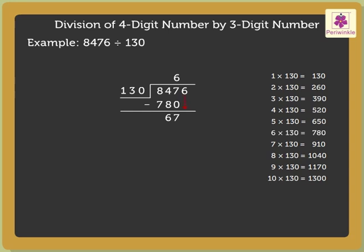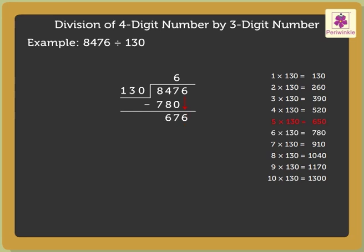Next, bring down the next digit, that is 6. After bringing down the digit, we again compare 676 and 130. Here, 676 is greater than 130, so we can divide 676 by 130. We need to find a multiple of 130 which is equal to or less than and nearest to 676. The nearest multiple is 650. As 130 into 5 is equal to 650, we write 5 in the quotient above the 6.